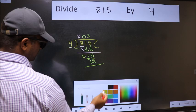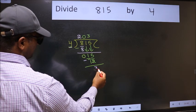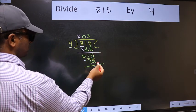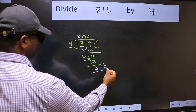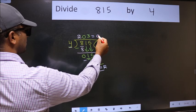Now we should subtract. We get 3. No more numbers to bring down, so we stop here. This is our remainder and this is our quotient.